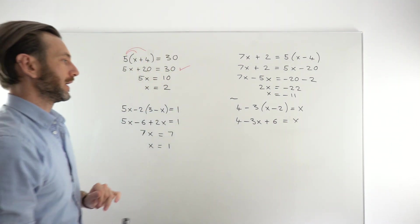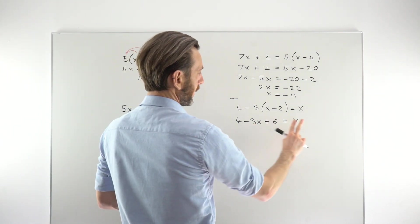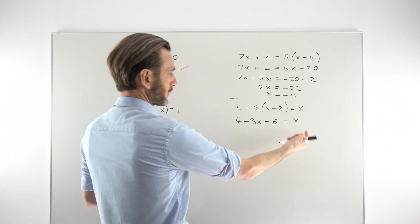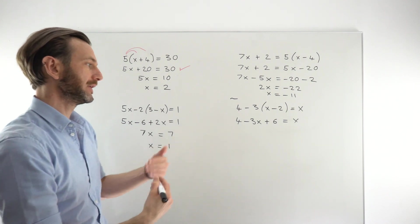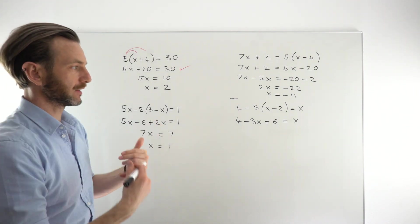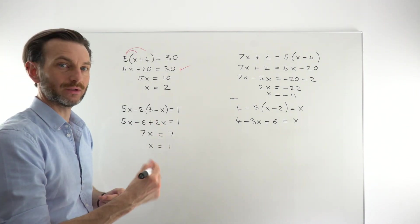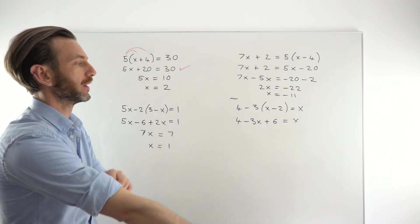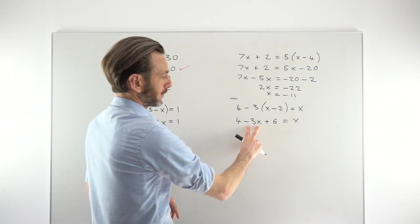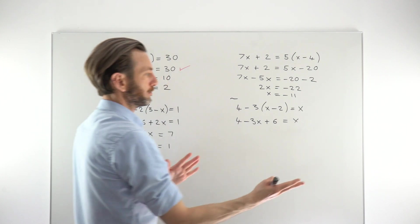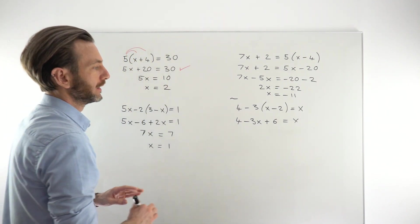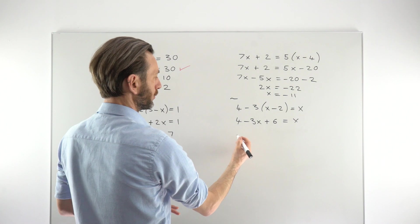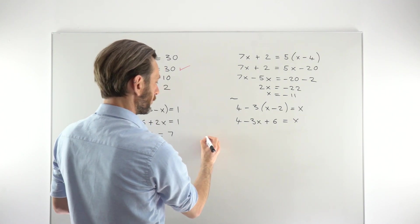There might be an argument in this case for taking the x term to that side because if we take this x over here, we've got minus 3x minus another 1x, which will give us a negative number of x's. It's fine. We can do that. Sometimes in this scenario, it's better to keep them positive. Let's work it both ways, just out of interest.